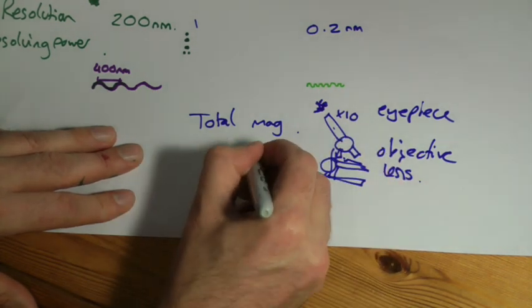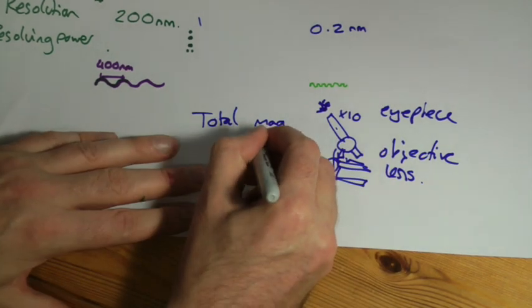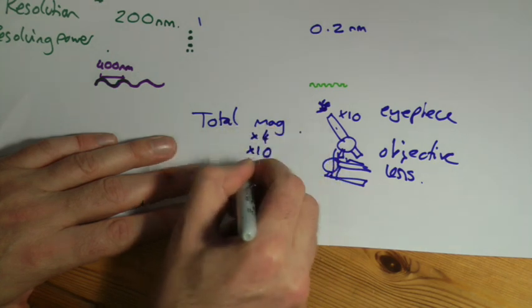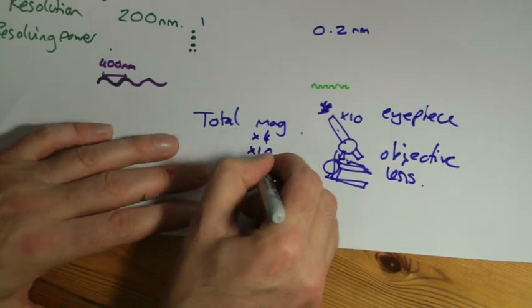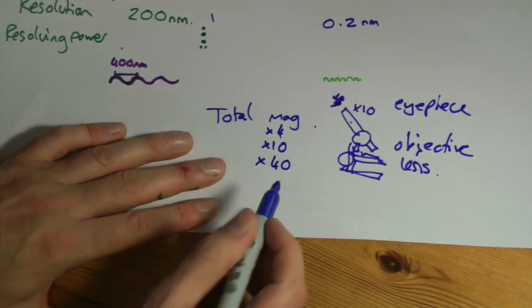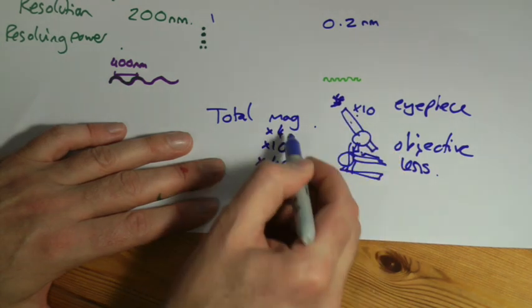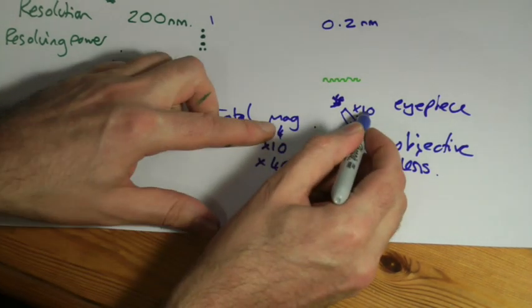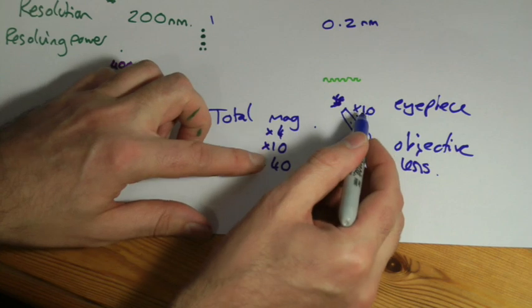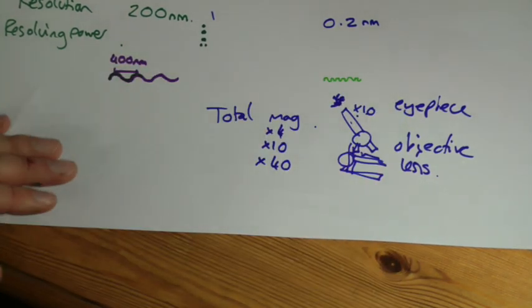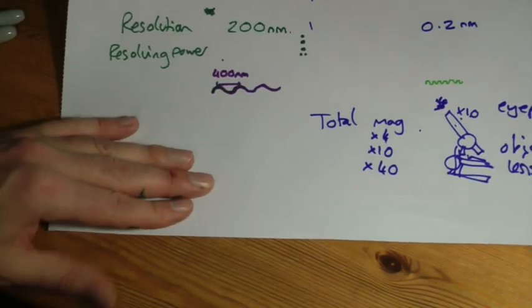And these are the ones that can change. They might be times 10 or times 4 is quite a common one. Times 40 is another common one. All you do is multiply the eyepiece by the objective lens. So times 40 times 10 is times 400. You just multiply the magnification together. That one's pretty straightforward.